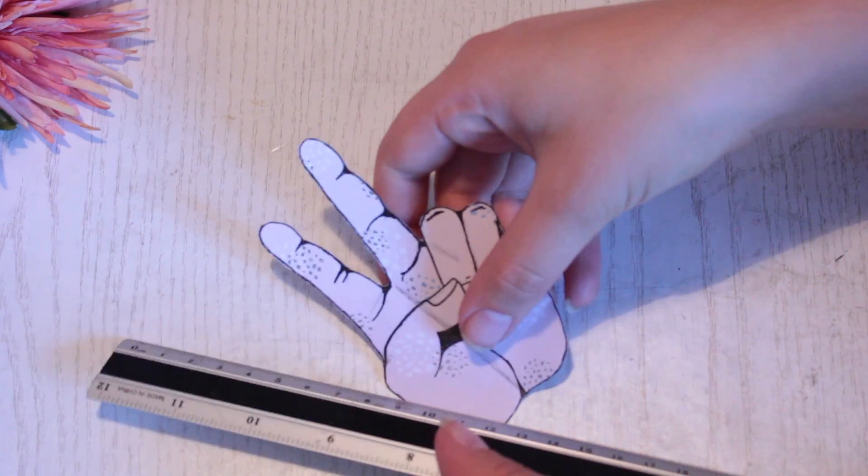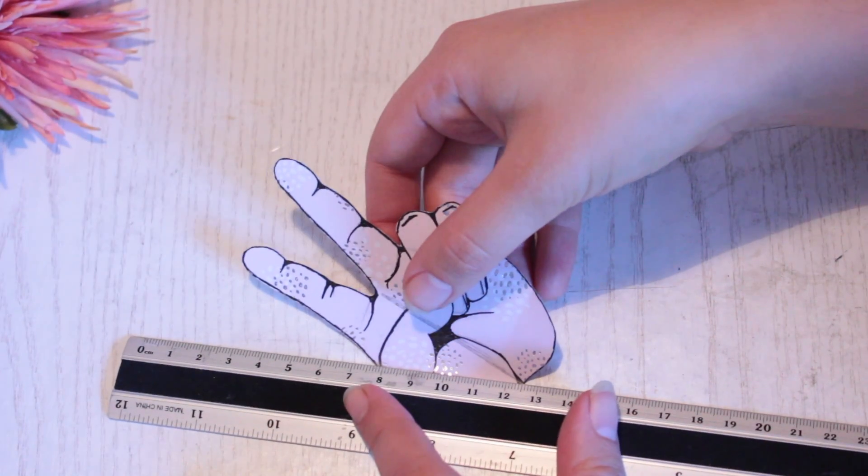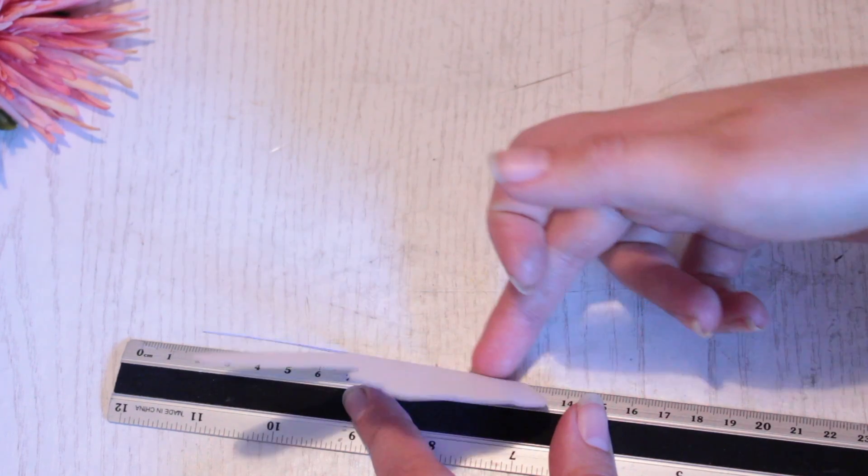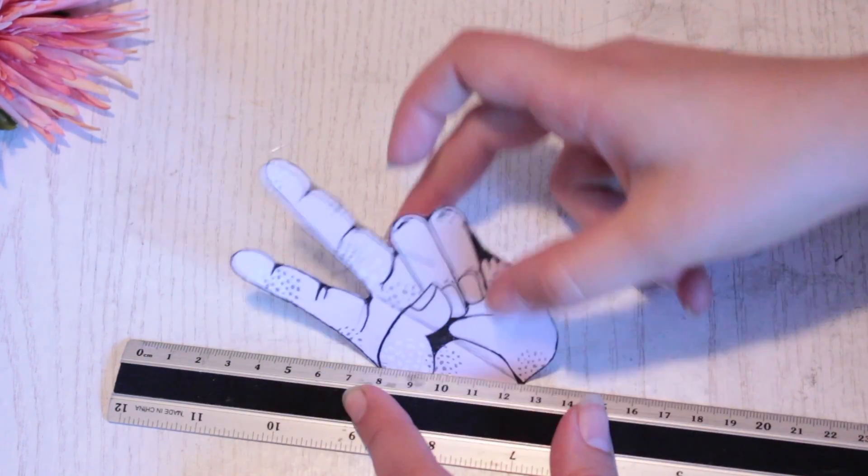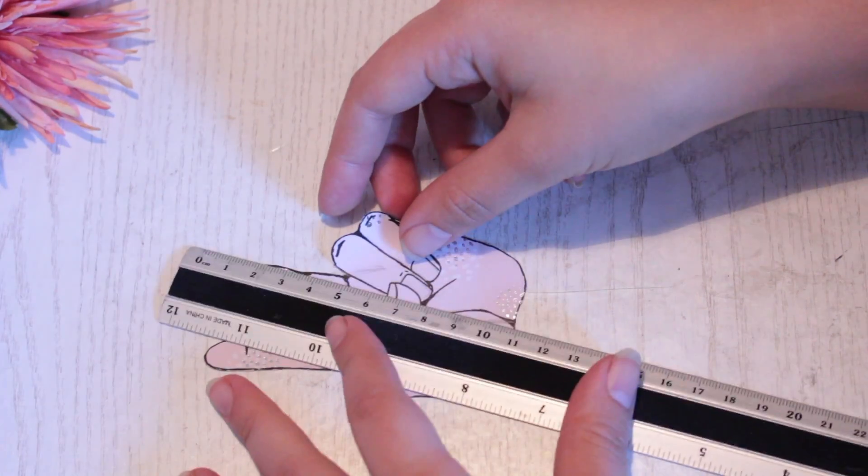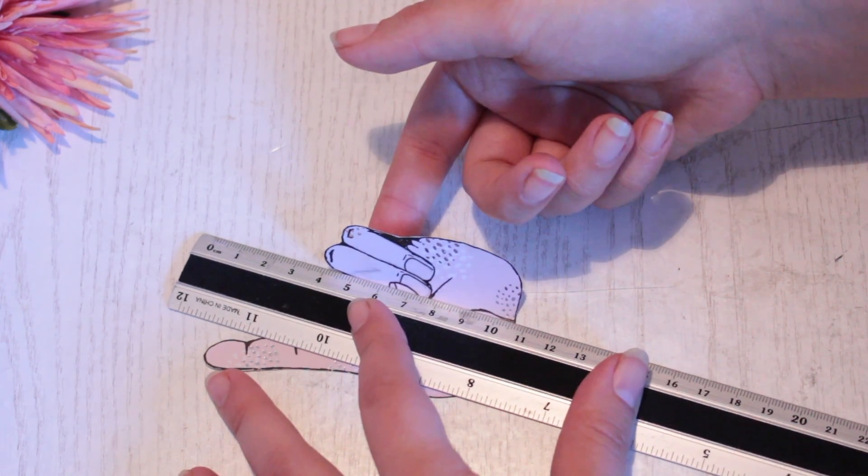Now you need to create an angle. To do that, place your ruler on the marking and also on the bottom of the middle score and then fold the paper over it. And then repeat the same process on the other side of the middle score.